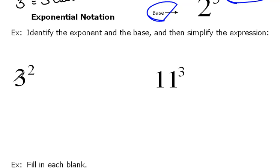Here we have a problem, and we read this as 3 squared, because it's to the 2 power. They say identify the exponent and the base, and then simplify the expression. So we want to tell what is the base, what is the exponent, and then we also want to figure out what this is.